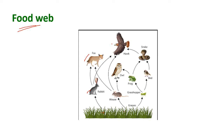Mouse eats grass and the mouse is eaten by owl — this is one food chain. The mouse eats grass and the mouse is eaten by vulture or eagle — another food chain. Grass is eaten by grasshopper, grasshoppers are eaten by birds, and birds are eaten by snakes — another food chain.